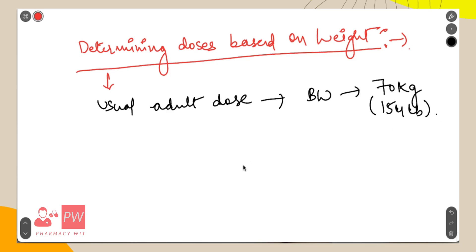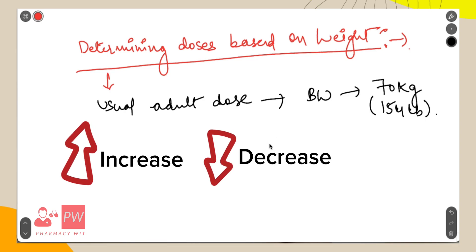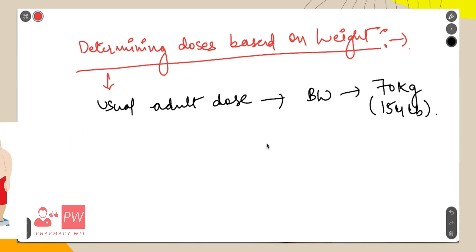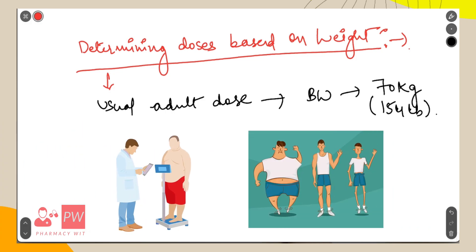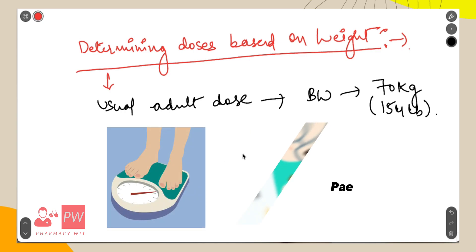However, some drugs act differently in the body depending upon the body size and composition and the concentration of the drug desired at the site of action. Therefore, some doses need to be increased or decreased for a particular overweight patient or a lean patient.